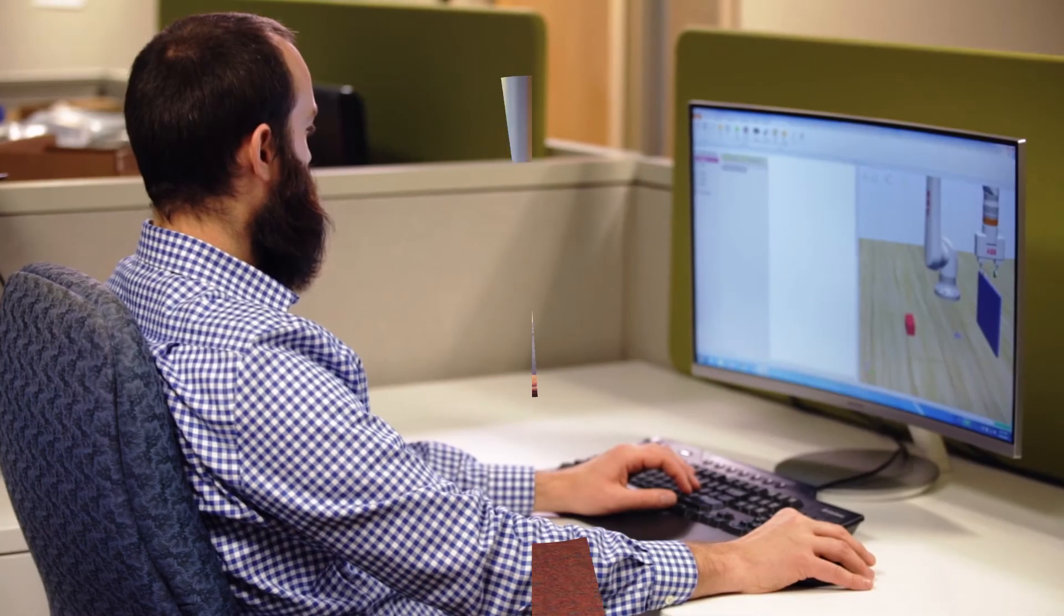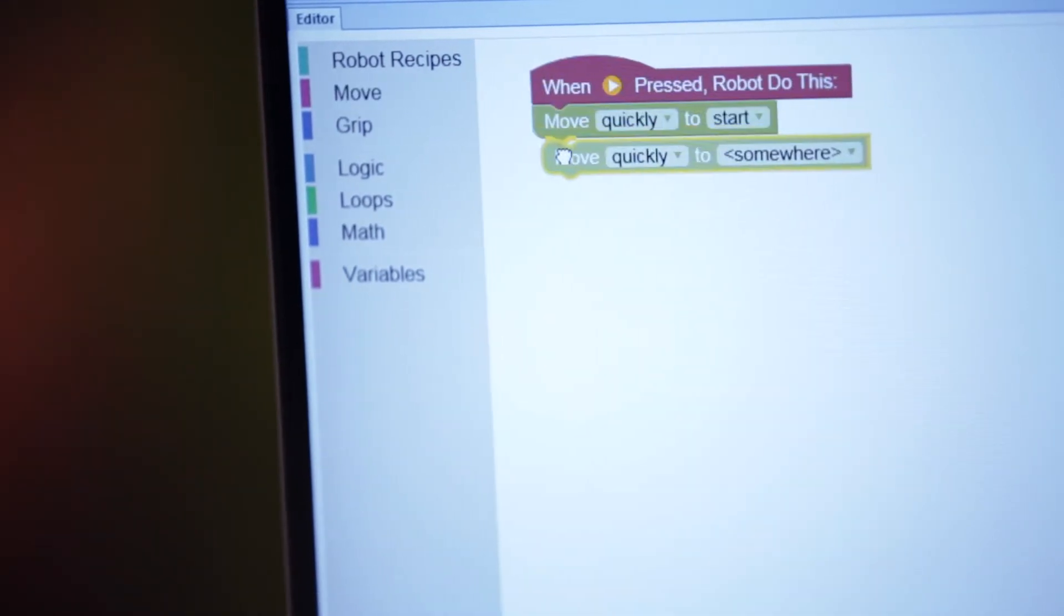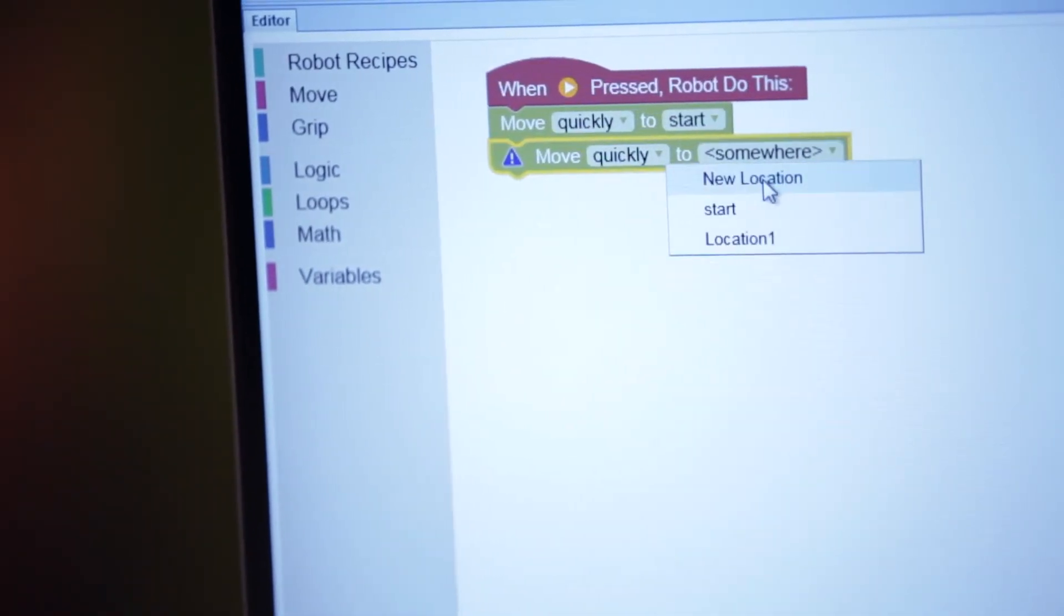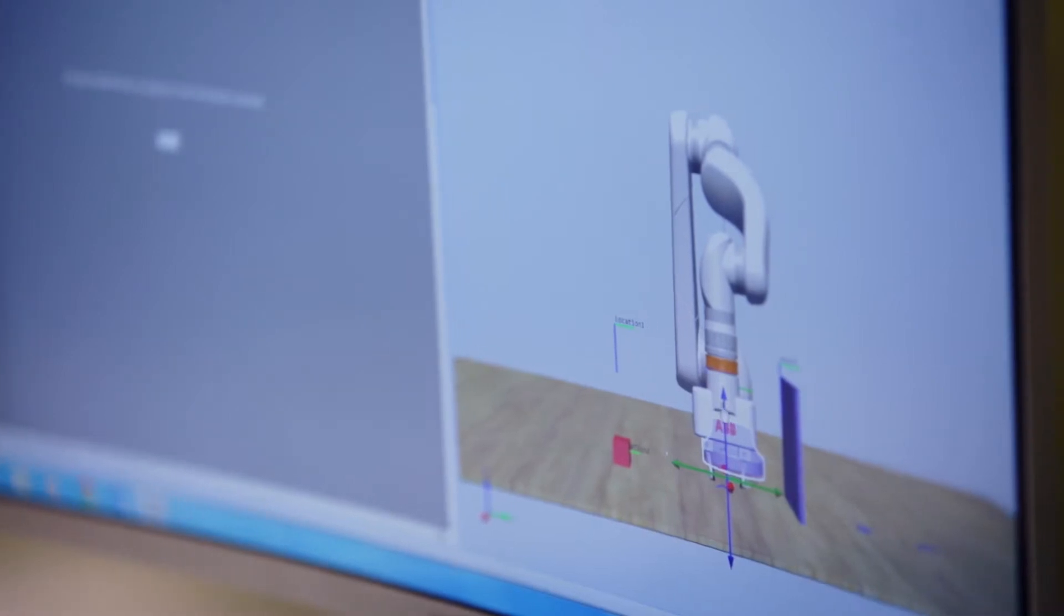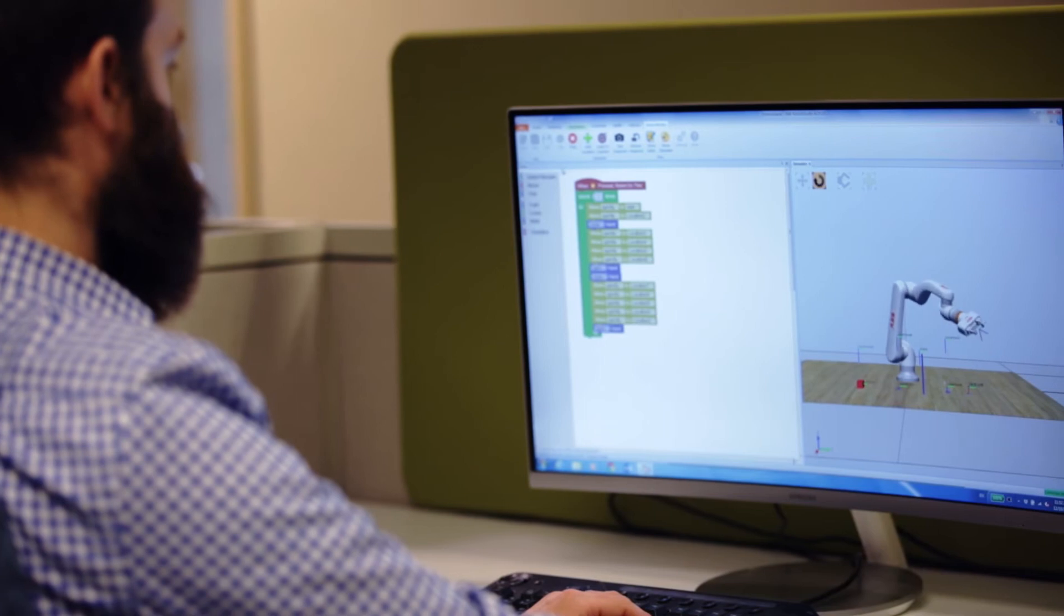Using its concepts we created an interface where users can click and drag commands to direct the robot. This empowers adults with little or no prior experience to program a one-armed industrial robot. This new programming environment is called CodeBlocks.